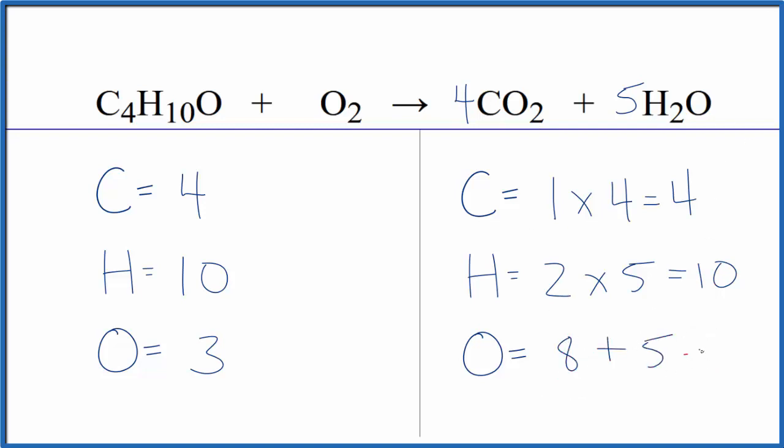Everything was going well until we got here, so this is where it gets tricky. Now we know that we have an oxygen, we have O2 by itself, so we can fix the oxygens by putting some number, even a fraction, in front of the oxygen.